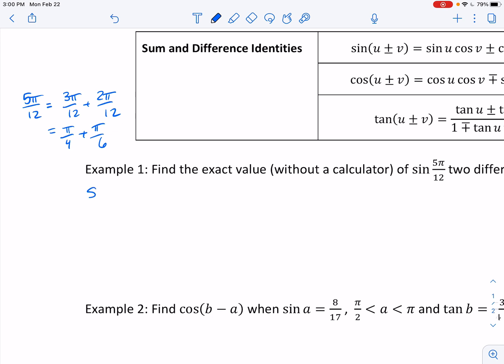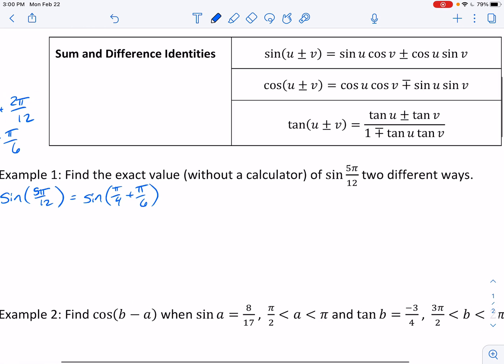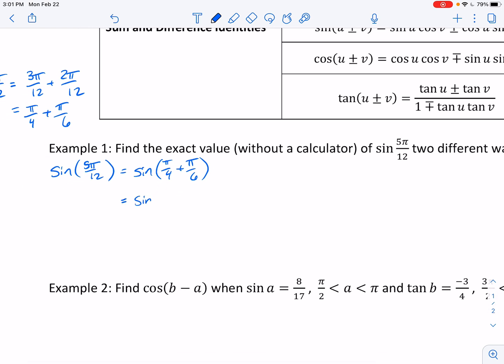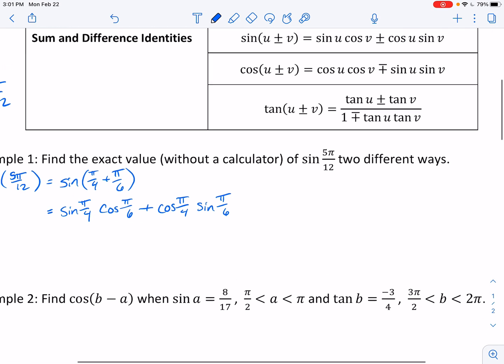So what I can do is I can say, okay, well, sine of 5 pi over 12, I could use the parentheses or not, but is equal to sine of pi over 4 plus pi over 6. Okay, that allows me to break this down, and now that I've got it as the sum of these different things, I can do sine, cosine, cosine, sine. And so I have sine of pi over 4 times cosine of pi over 6 plus, the sine has the same sign, plus cosine of pi over 4 times sine of pi over 6.